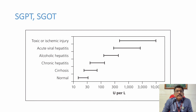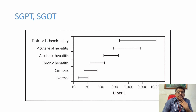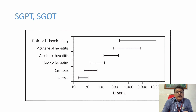Looking at SGOT and SGPT levels in various liver diseases: ischemic or toxic hepatitis shows maximum SGPT elevation in a short time, ranging from 1,000 to 10,000. Acute viral hepatitis is less than 10,000. Alcoholic hepatitis is in the hundreds. Chronic hepatitis and cirrhosis show lower values because they are chronic processes; normal is 10 to 40. So very few conditions reach above 1,000 — ischemic hepatitis, viral hepatitis, and toxic hepatitis.